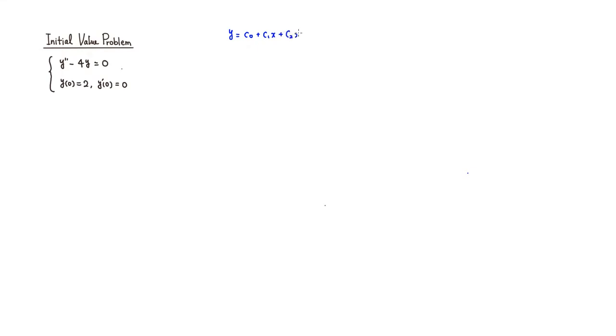Remember that the solution y is a power series, so it's going to look like c0 plus c1x plus c2x squared, and so on. If you look at y(0), plugging in 0 makes every term after the first equal to 0, so all you get is c0. Since y(0) must equal 2, this tells us that c0 equals 2.